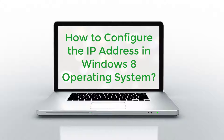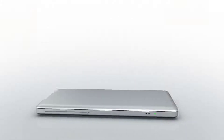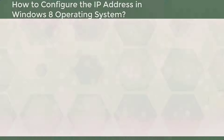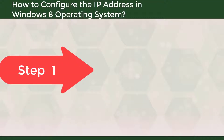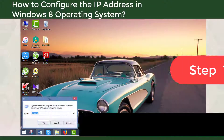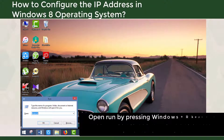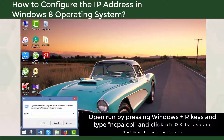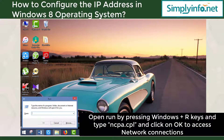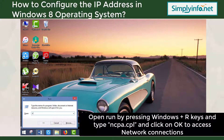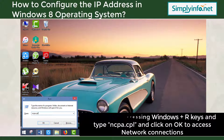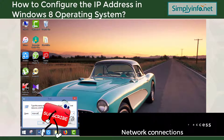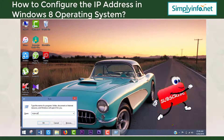How to Configure the IP Address in Windows 8 Operating System. Step 1: Open Run by pressing Windows + R key, type ncpa.cpl, and click OK to access network connections. That's a shortcut.